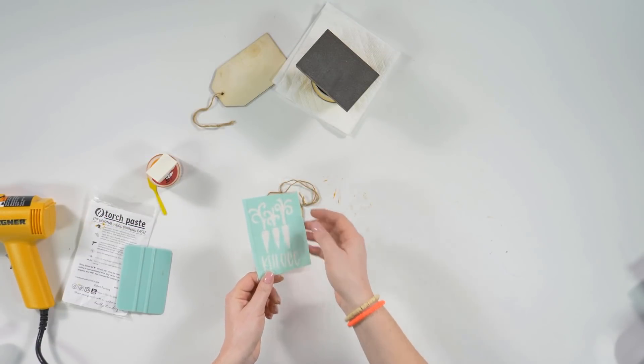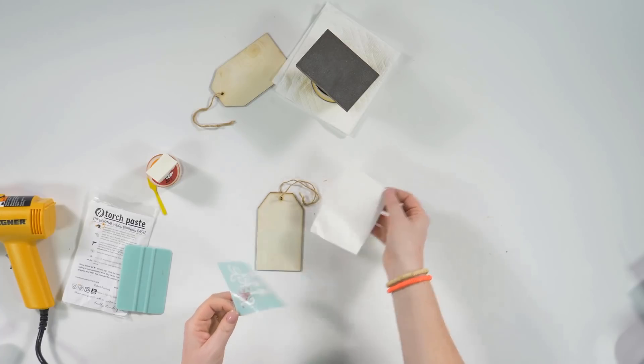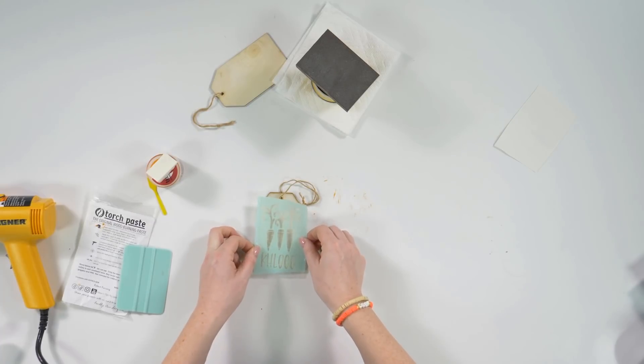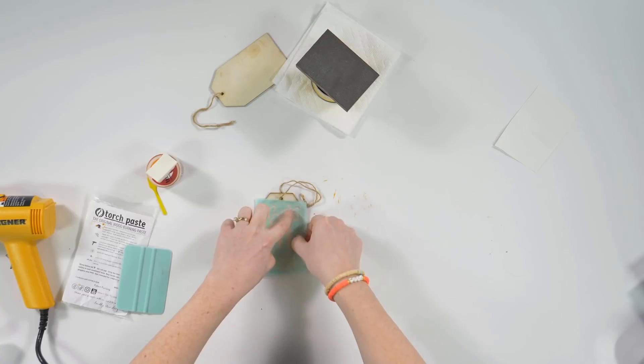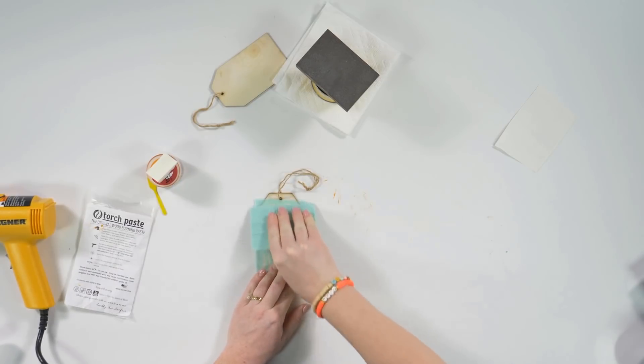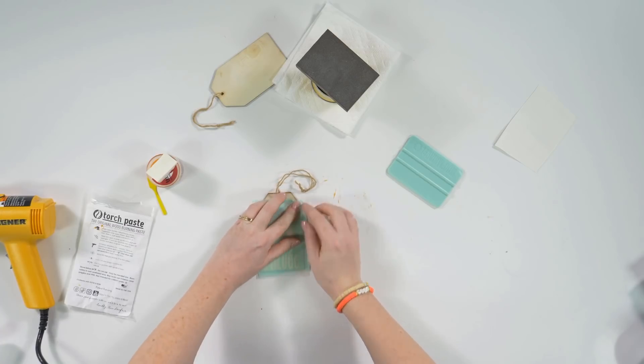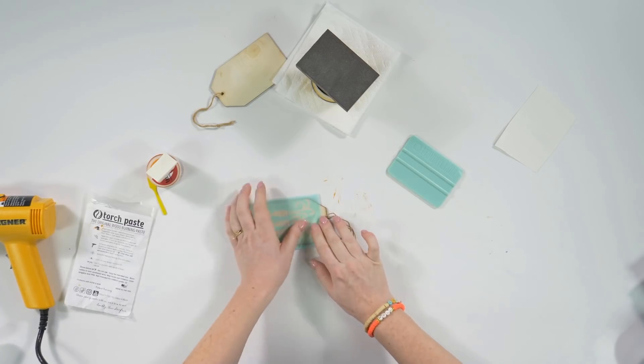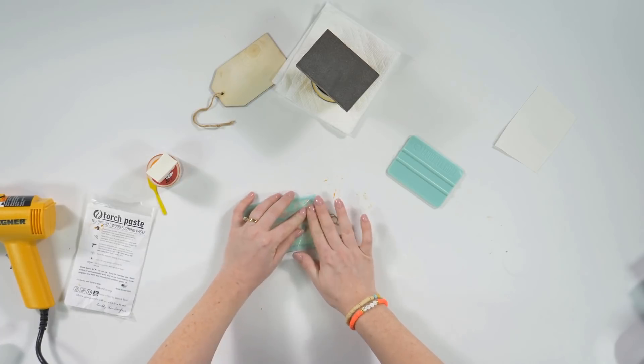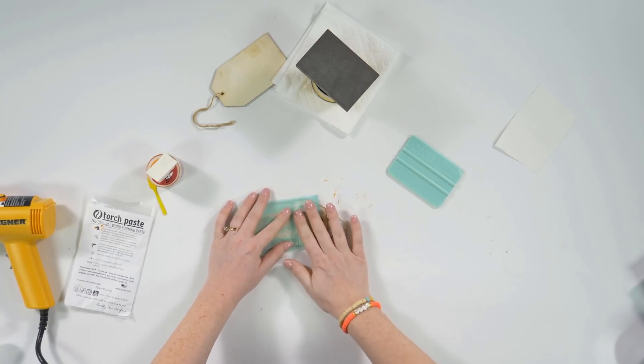We've got our Cricut stencil already cut out. So I'm going to go ahead and take the backer off. Just be very careful when you're pulling that off. And then we're just going to line this up centrally. You can kind of see the tag through the back of the stencil. I'm just lining her name up with that bottom edge and pay attention to the tops of the carrots so that they don't go off the actual edge of the tag. I'm going to use a burnishing tool and put that on there really good. Then we're going to go ahead and take that transfer vinyl off of the top. You just want to make sure that your stencil isn't coming up with your transfer tape as you peel it off. It tends to a little bit, especially with stencil vinyl, so you just have to be super careful.